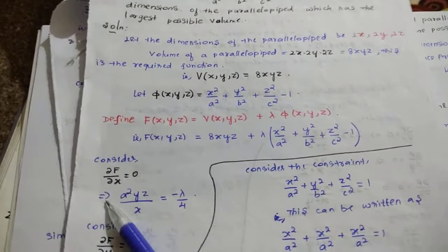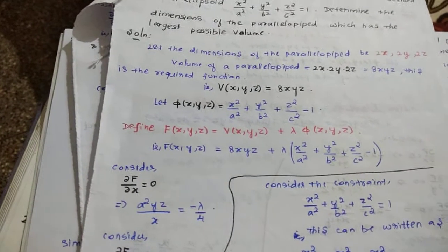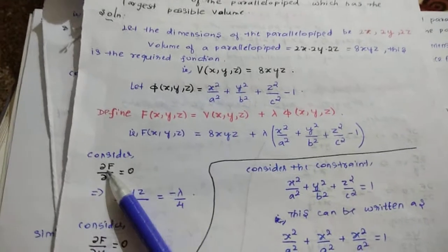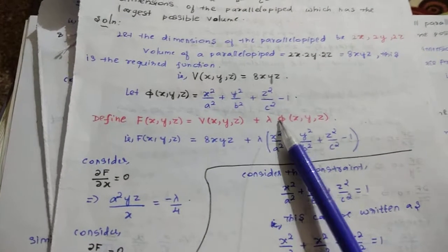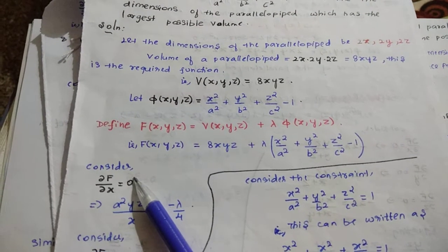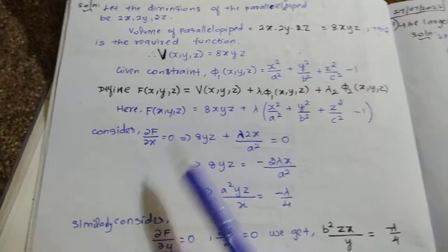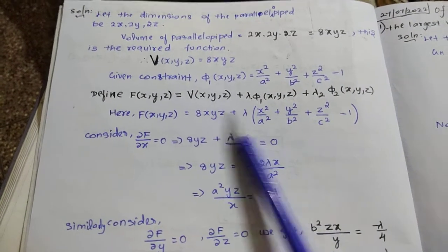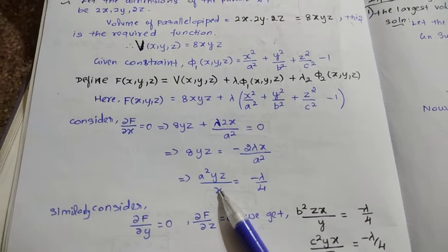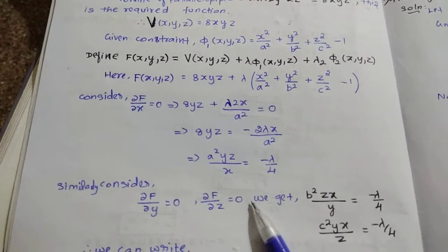Next, consider ∂F/∂x = 0. Our intention is to find the values of x, y, and z. We partially differentiate F with respect to x and set it equal to zero. Similarly, we do this for ∂F/∂y = 0 and ∂F/∂z = 0. From each equation we extract the value of −λ/4.